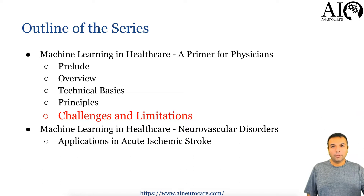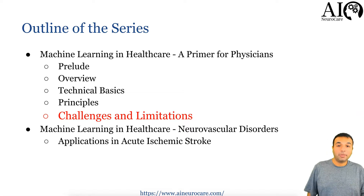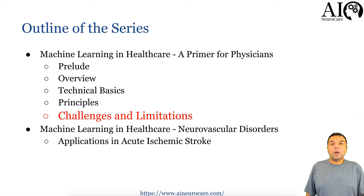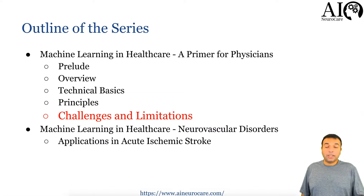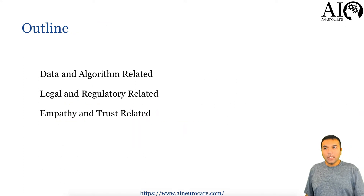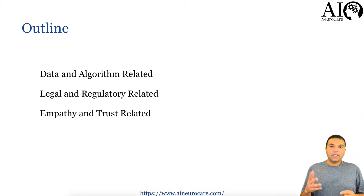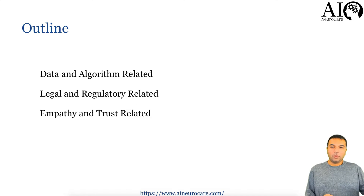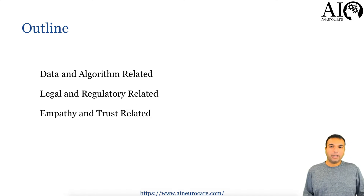After this, we'll go into different applications one by one — clinical studies applicable to acute ischemic stroke, cerebral hemorrhage, aneurysm, and then palliative care, predicting mortality, readmissions, et cetera. This lecture is divided into three big topics: data and algorithm related, which is the most important; then legal and regulatory related; and then empathy and trust related.